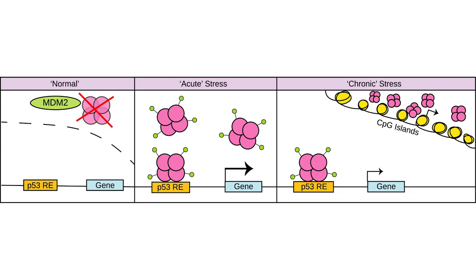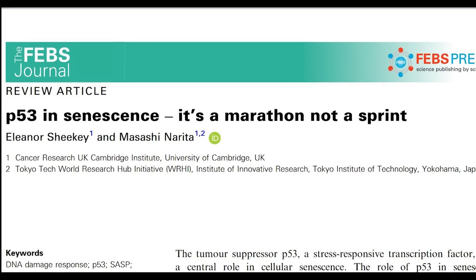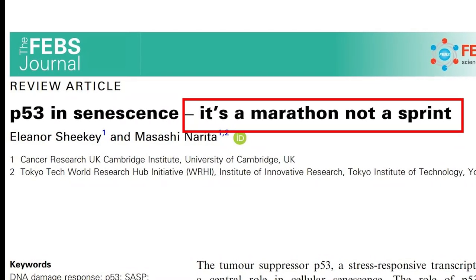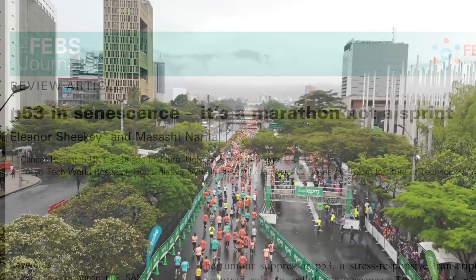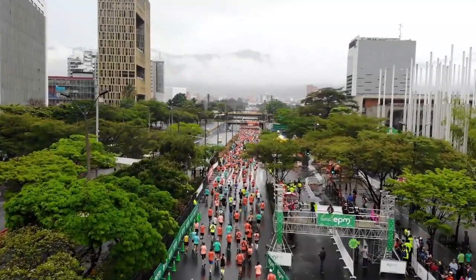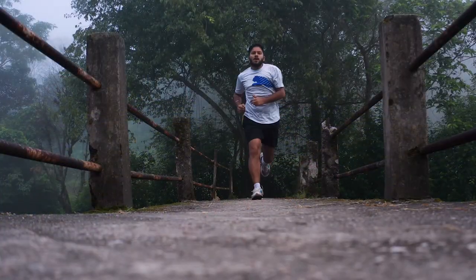So this is sort of where the catchy title comes back, It's a Marathon, Not a Sprint, which I have to be upfront and honest and say that this title is not my idea, shout out to Ioana and her genius brain. Because senescence isn't a sprint, at least in cell culture experiments, it can take days to establish. And like how you would prepare differently for a sprint versus a marathon, the regulation and downstream consequences of p53 also appear to differ.